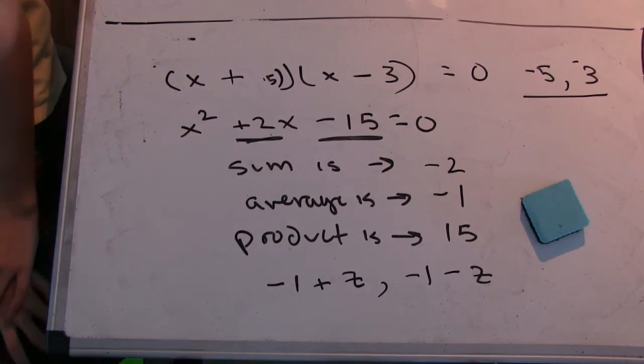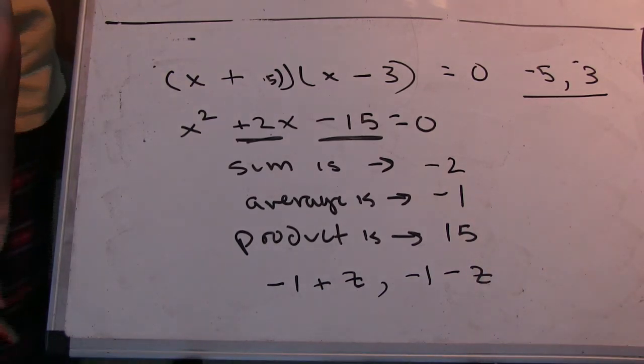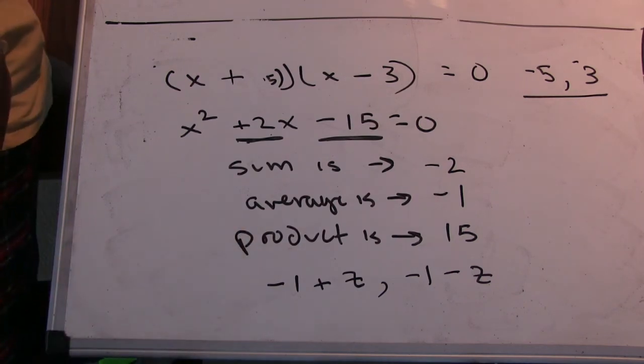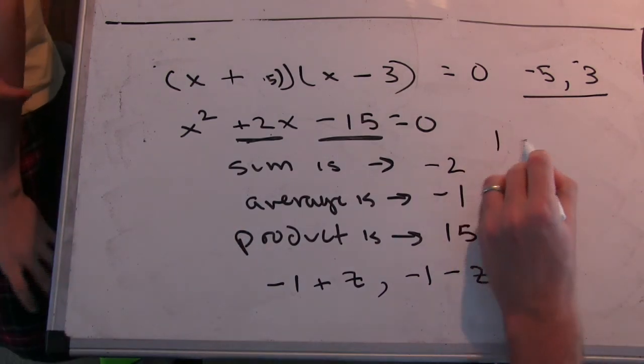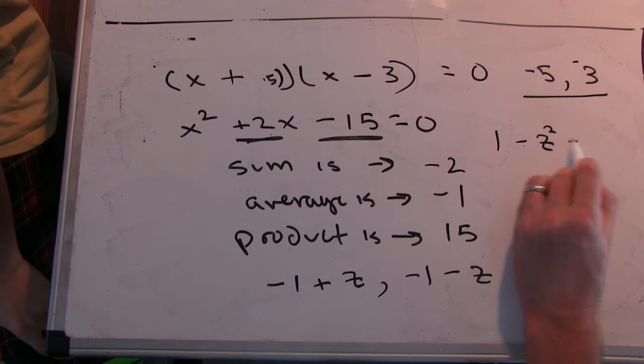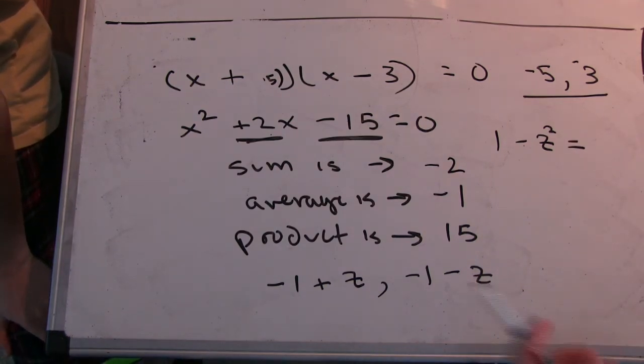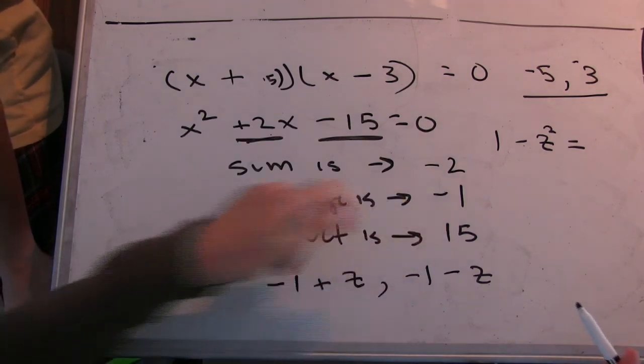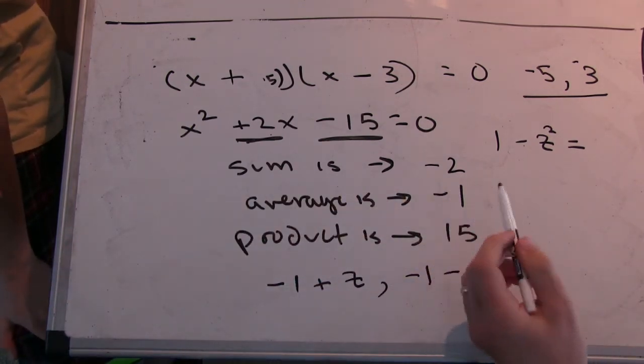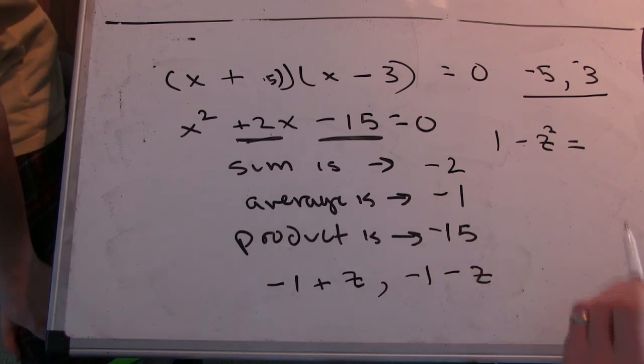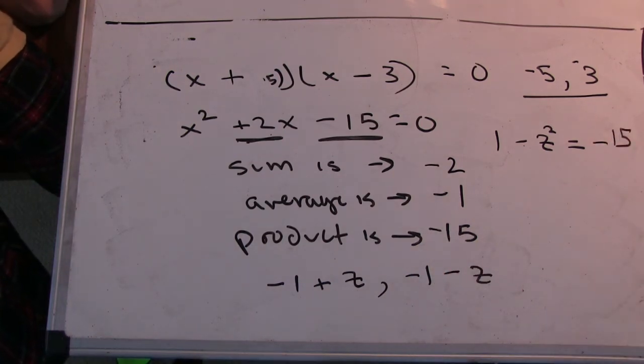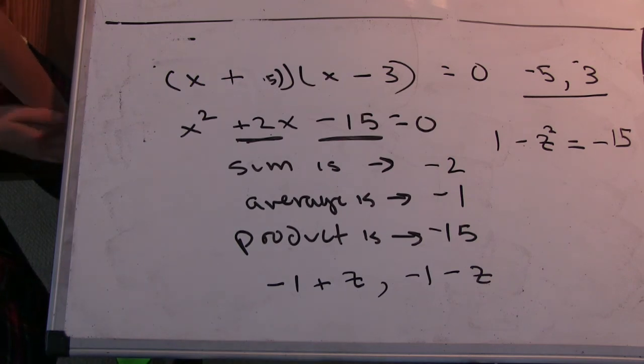Okay. So then we multiply this out. Alright, and what do we get? And we get minus one squared. So one. Minus z squared. And that equals zero. That's going to equal the product. It's the product that equals fifteen. Negative fifteen. Negative fifteen. Oh yeah, we said the product, but I wrote fifteen, but I meant negative fifteen.